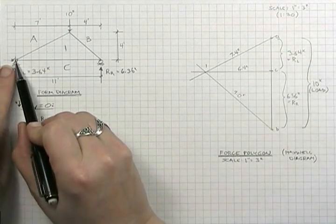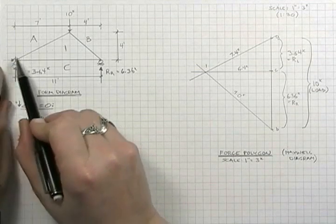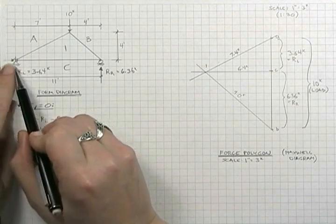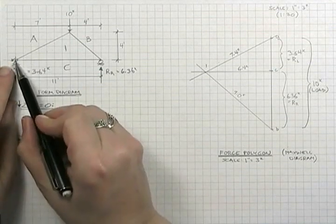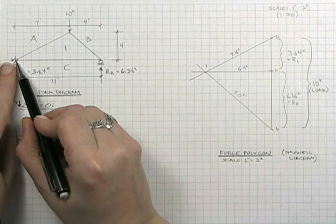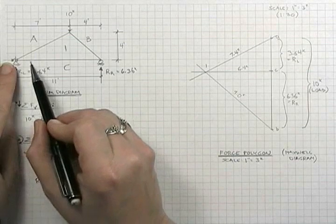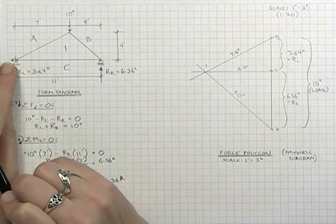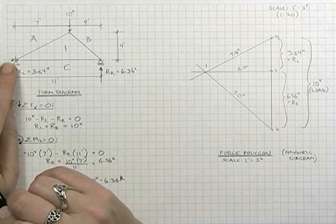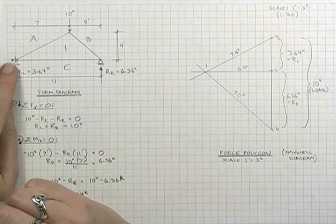Any joint is labeled by the letters and numbers that surround it read in a clockwise order. That's very important. It has to be in a clockwise order. So the joint at the lower left here would be identified as A1C. We could also call it 1CA or CA1. What we can't do is call it C1A or anything reading in a counterclockwise direction. Similarly, the joint at the top would be B1A, AB1, or 1AB.